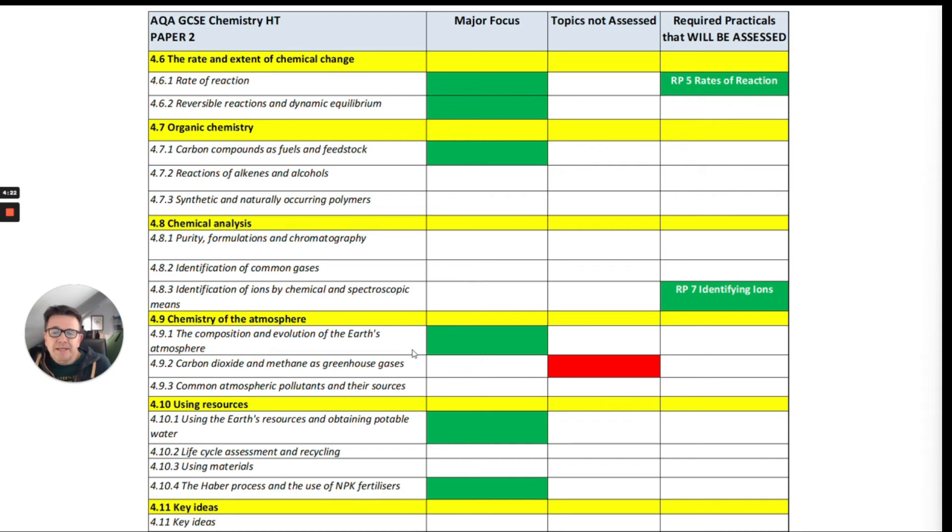Chemistry of the atmosphere, so evolution of the atmosphere, but they will not assess you on carbon dioxide and methane as greenhouse gases. So there's nothing on greenhouse gases. Using resources, so that seems to be important again. Particularly the Haber process and using the Earth's resources and obtaining potable water.